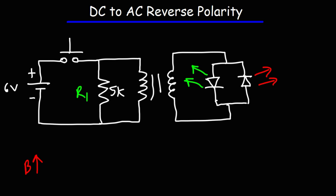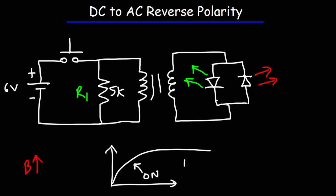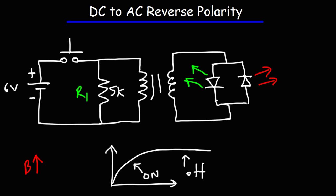The green LED will not stay on because eventually the current is going to reach its maximum. When the current is constant, the magnetic field is no longer expanding — it reaches its maximum value — and there's not going to be any induced voltage in the secondary coil. The only way you can induce a voltage in the secondary coil is if the magnetic field is changing, which means there has to be a change in current to create a change in magnetic field.